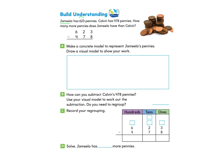Chamelea has 623 pennies. Calvin has 478 pennies. How many more pennies does Chamelea have than Calvin? They have written the problem out for you — the number of pennies Chamelea has, the number Calvin has, and we're trying to find the difference. Make a concrete model to represent Chamelea's pennies. Draw a visual model to show your work. We know the number of pennies she has is 623.